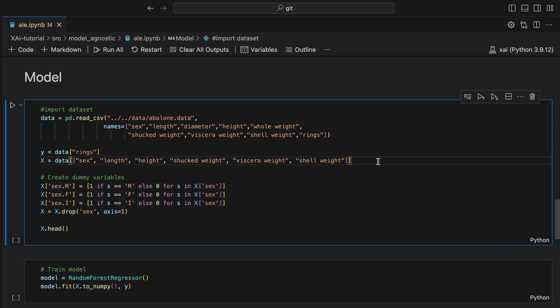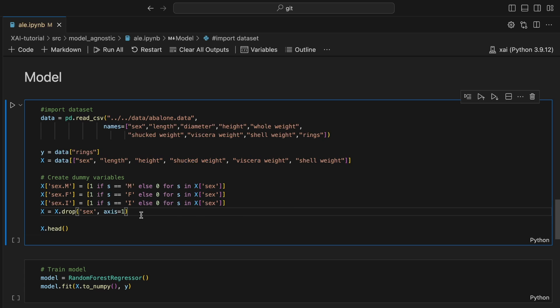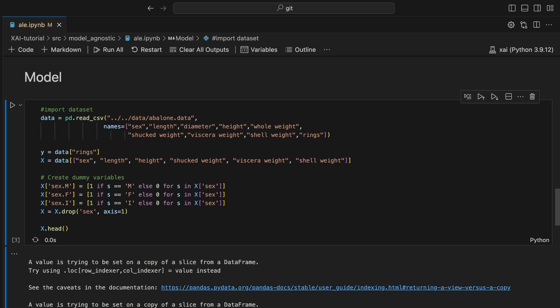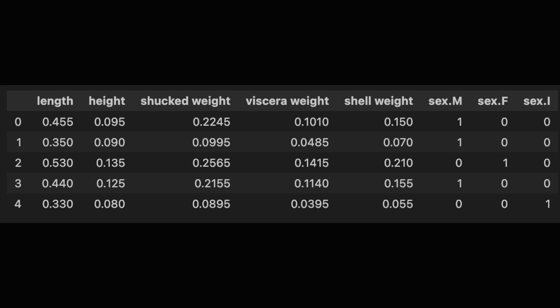Firstly, we exclude diameter and whole weight from the feature list. This is because we saw that they had a correlation of 1 with the other features. Finally, we create one-hot encodings for the sex feature. Here you can see a snapshot of the final feature set.